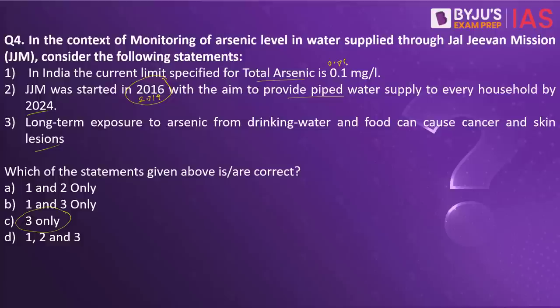In India, the current limit specified for total arsenic is not 0.1 but instead 0.01 mg per litre. This is very important from the preliminary examination point of view. Under the Jal Jeevan Mission, as per the existing guidelines — that is the Bureau of Indian Standards IS 10500 standard — the limit specified for total arsenic is 0.01 mg per litre. So the first statement is wrong.